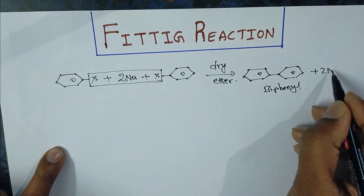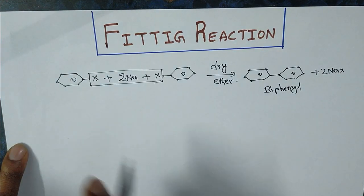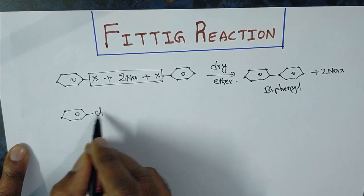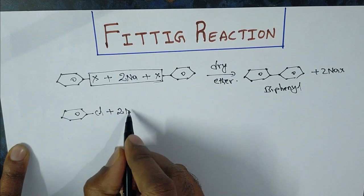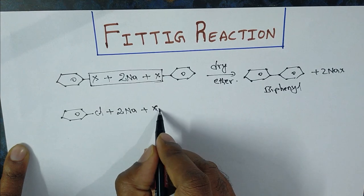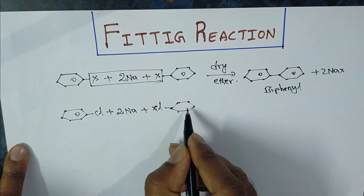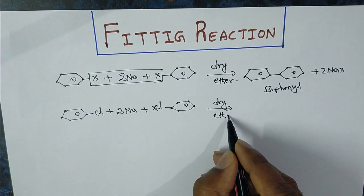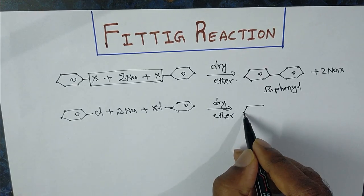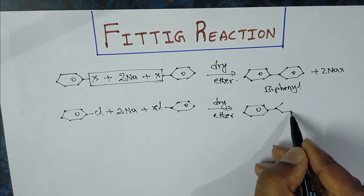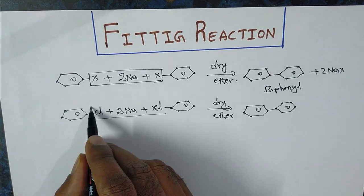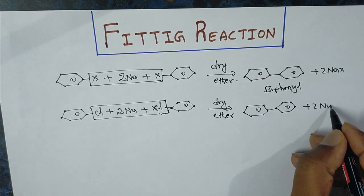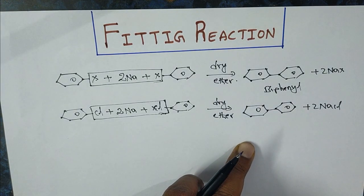The name of this compound is biphenyl or diphenyl. Biphenyl plus 2NaX is removed. Suppose if we use bromobenzene or chlorobenzene: two moles of chlorobenzene when reacted with sodium metal in the presence of dry ether, we get biphenyl. Here 2NaCl is removed. So this is called the Fittig reaction.